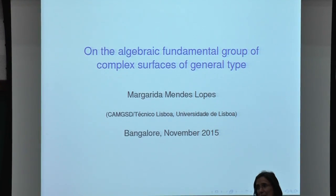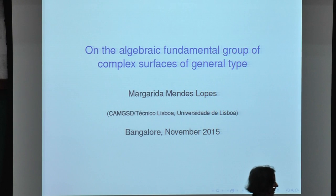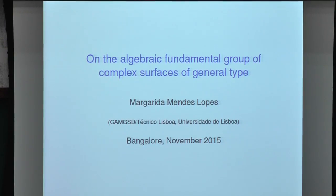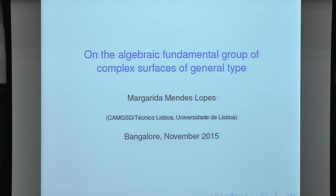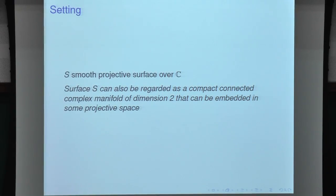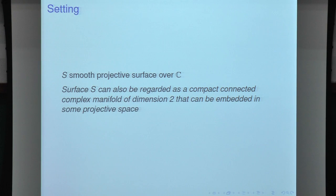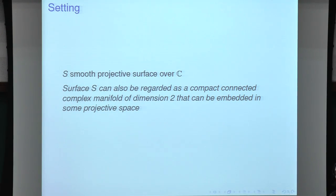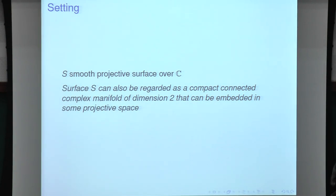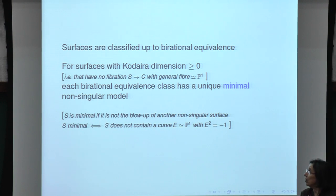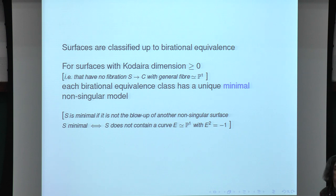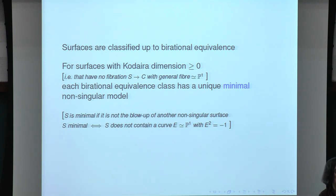or even better, Reid's conjecture. I'll start by saying where I'm going to work: complex projective surfaces. Surfaces are classified up to birational equivalence, and for surfaces with Kodaira dimension bigger or equal than zero, each birational equivalence class has a unique minimal smooth model.